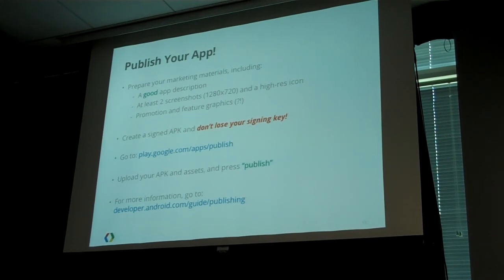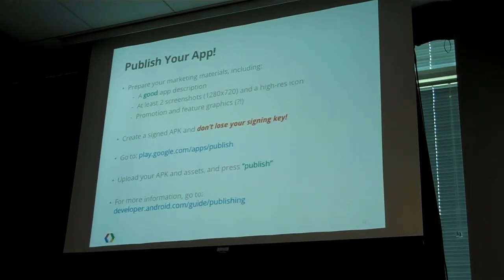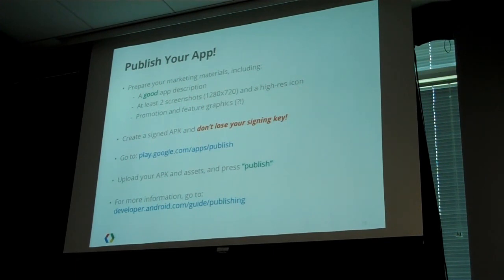Once you have all your promotional material straightened out, create a signed APK — and be sure you do not lose your signing key. We've seen developers that have done that, and it's not a great process to fix. Go to the publishing site, upload your APK and assets, and make sure you hit the publish button. There are two buttons: publish and save. Save will store everything you've uploaded but will not make your app live for users to download. That's what happens when you push the publish button. There are two states for apps: uploaded and published.